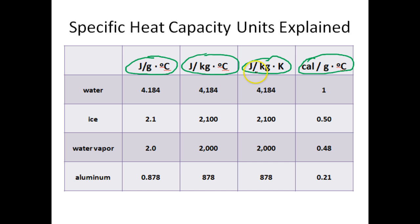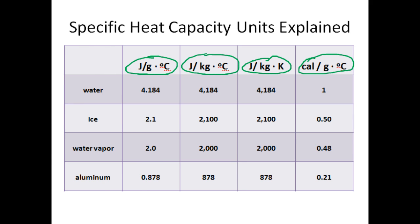Joules per kilogram Kelvin is very similar — it means if you have one kilogram of water and you want to raise its temperature one Kelvin, that water will need to absorb 4,184 joules of energy. Last, we've got calories per gram degree Celsius, which means if you've got one gram of water and you want to raise its temperature one degree Celsius, that water will need to absorb one calorie. So these are the most common specific heat capacity units you will find in your textbook and classroom.